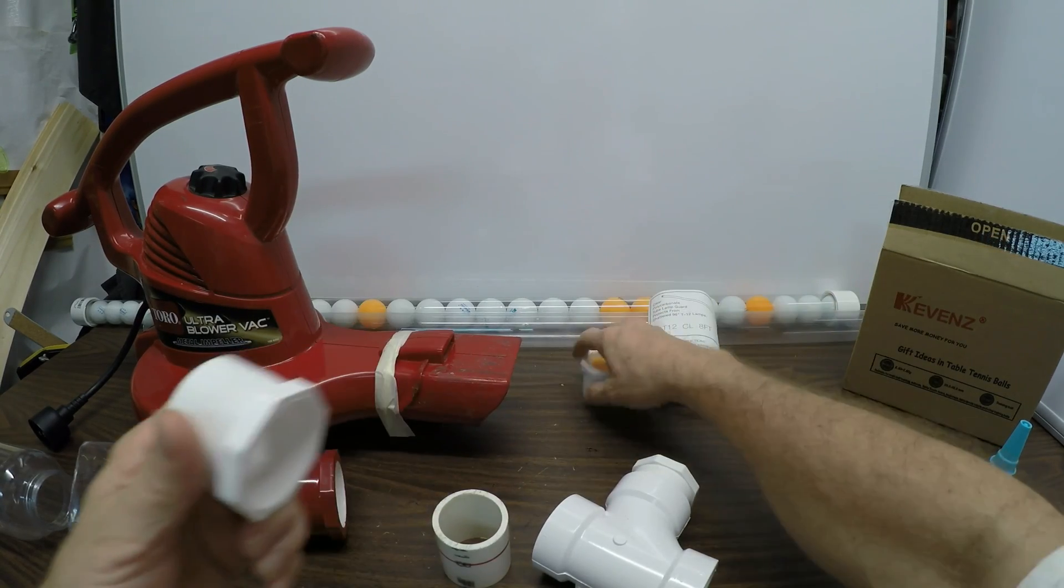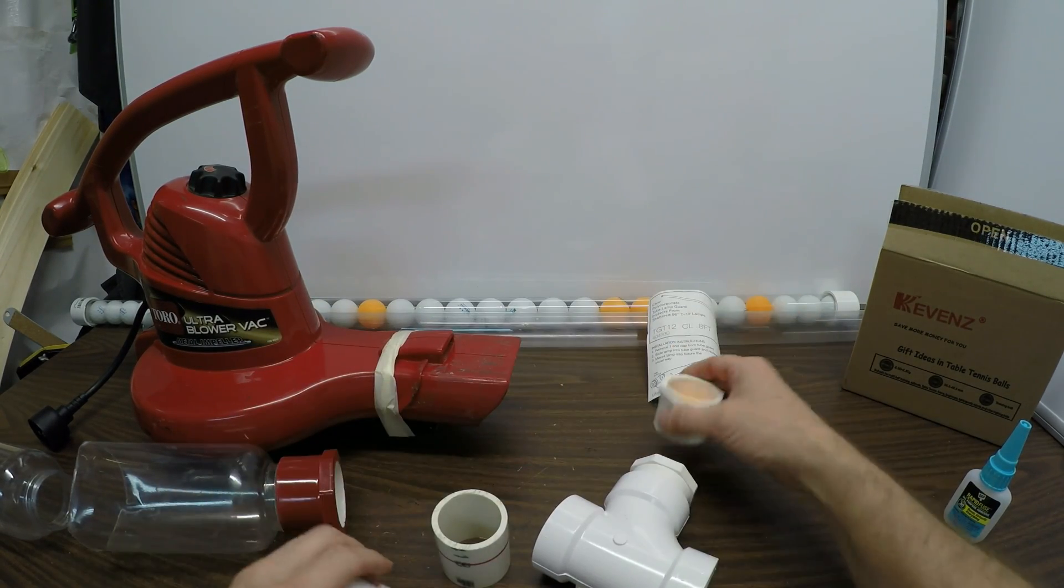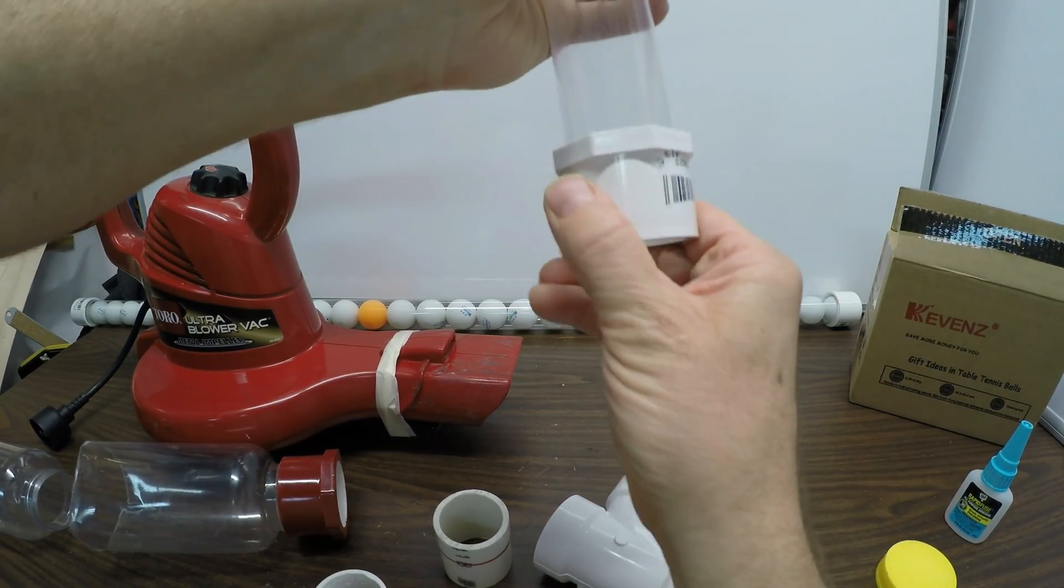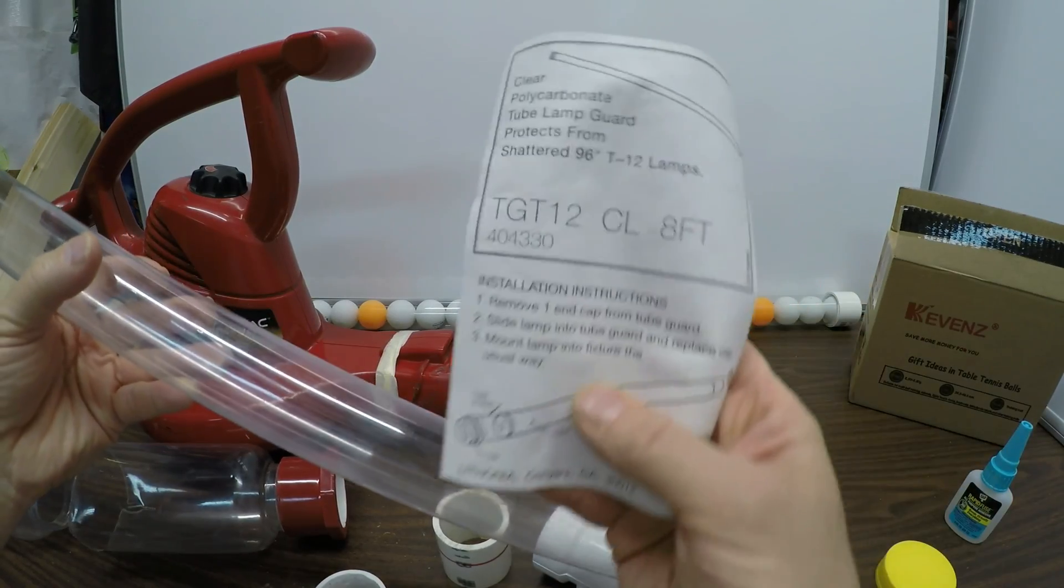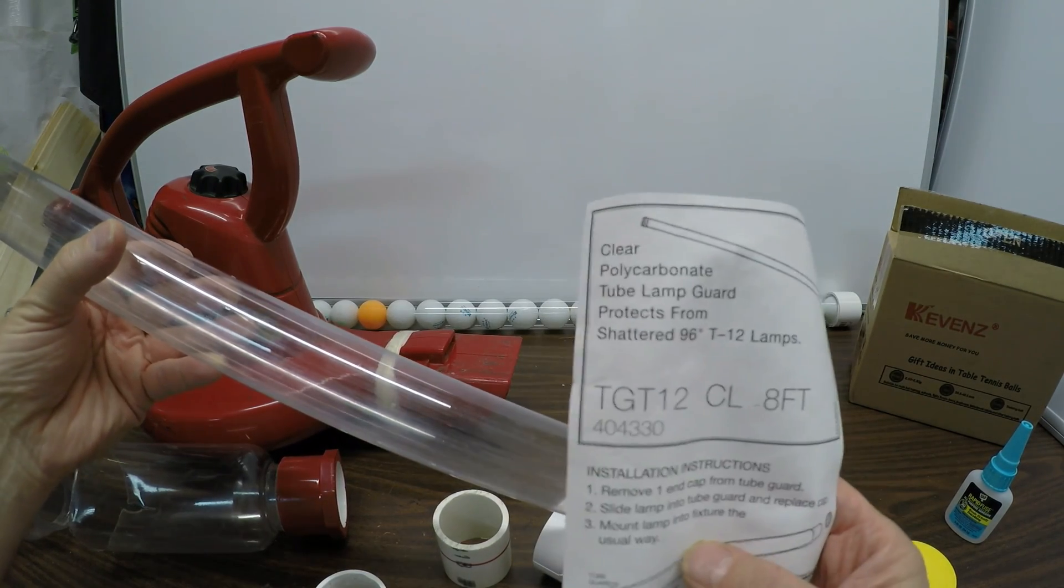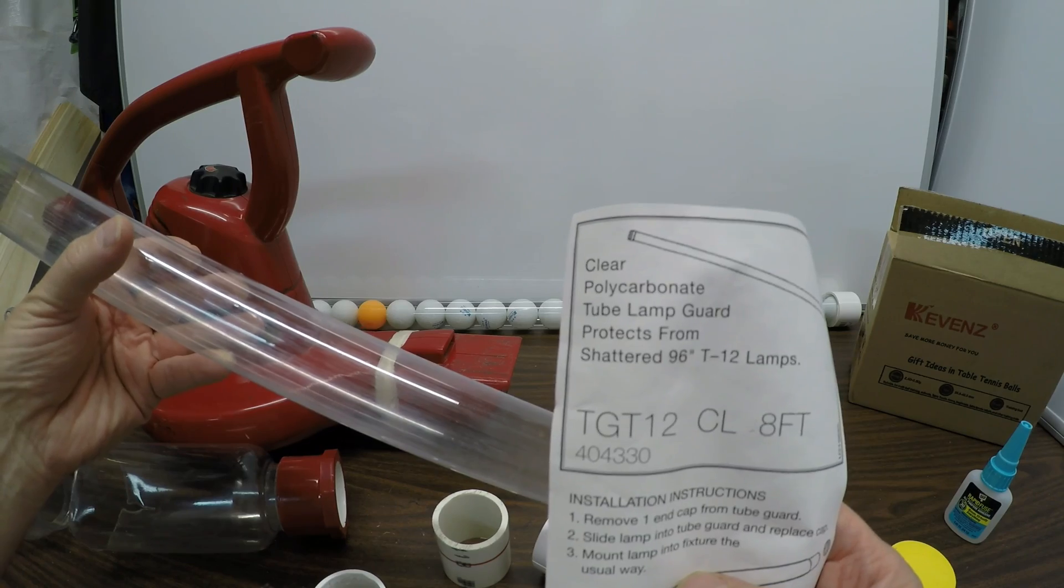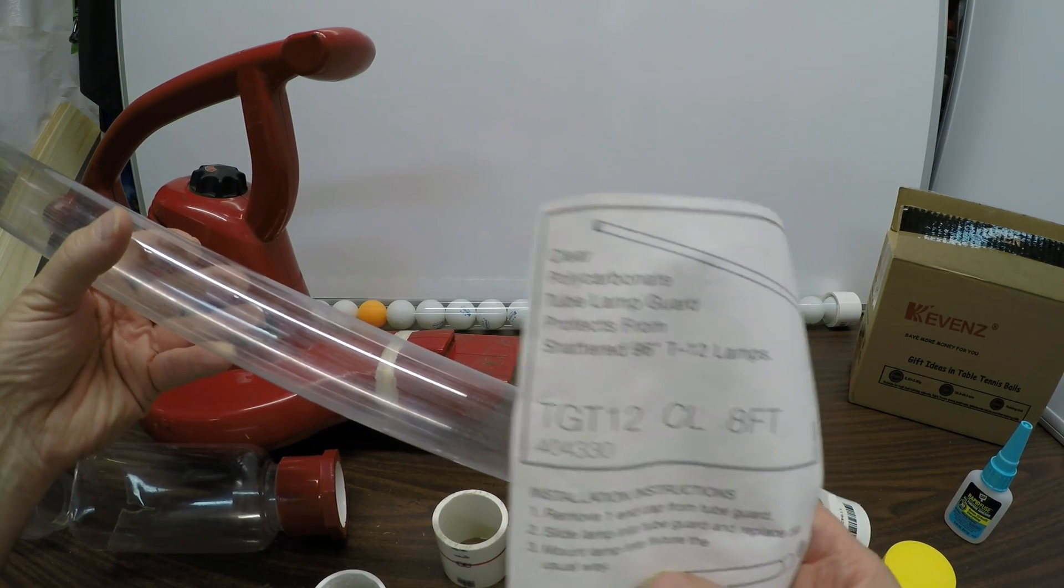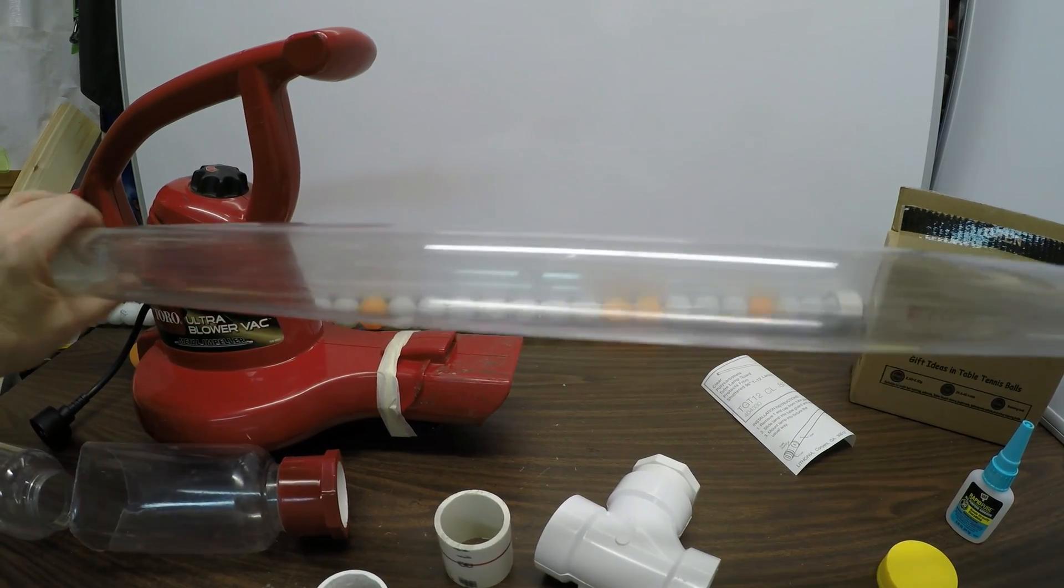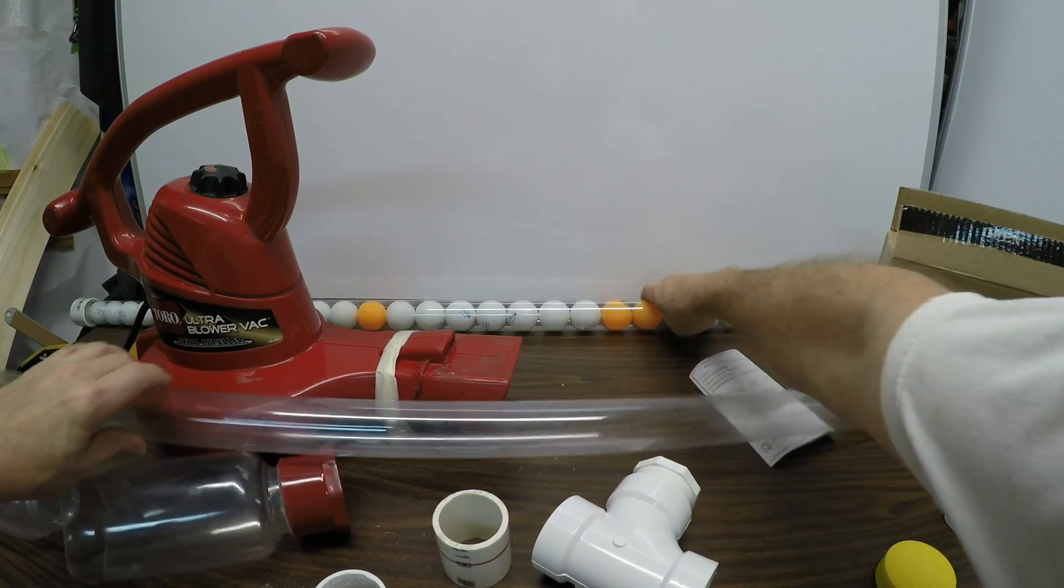The reason why I use that is because I wanted something that fit really smooth. It's a real nice snug fit. What this is is TGT12CL for eight foot fluorescent. It's clear polycarbonate lamp guard for T12 bulbs. I wanted to use the clear pipe to show the balls.